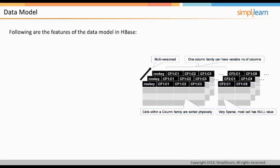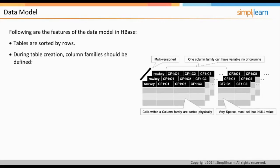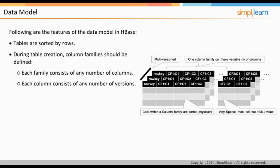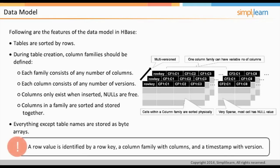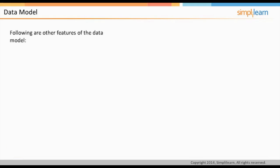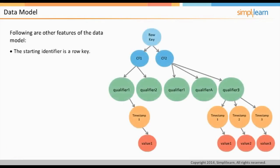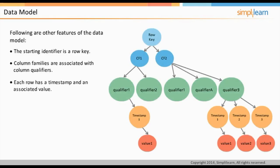In HBase, all tables are sorted by row keys. At the time of table creation, you need to define only column families; each family may consist of any number of columns, and each column may consist of any number of versions. Columns only exist when inserted, while nulls are free. Columns within a family are sorted and stored together. Everything except table names is stored as a byte array. A row key, a column family with columns, and a timestamp with version typically identify a row value. Column families are associated with column qualifiers, and each row has a timestamp and an associated value.